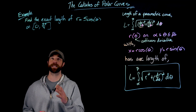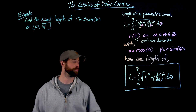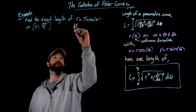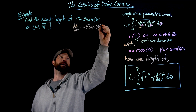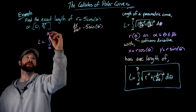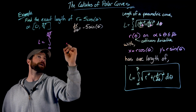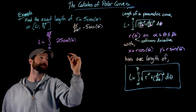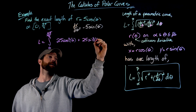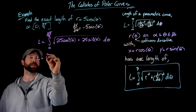Let's do a couple of examples. In this first example, we find the exact length of r = 5·cos(θ) on [0, 3π/4]. The first step is to calculate dr/dθ. Differentiating both sides with respect to θ gives dr/dθ = −5·sin(θ). Plugging into the formula, the length equals the integral from 0 to 3π/4 of sqrt(25·cos²θ + 25·sin²θ) dθ.